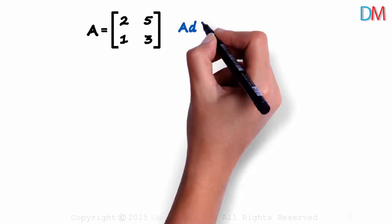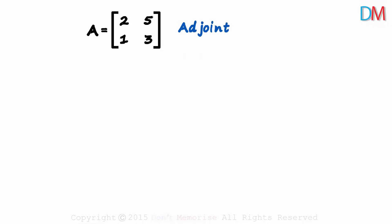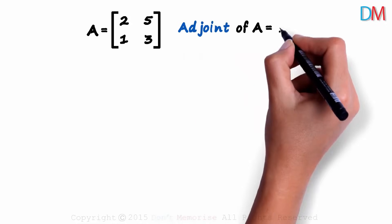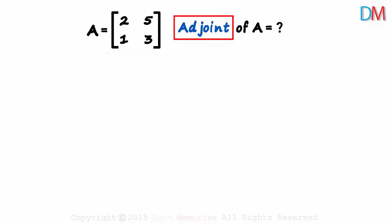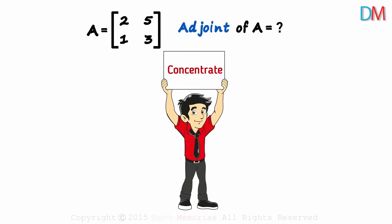Given a matrix, how do we find its adjoint? This is a 2 by 2 matrix A and we need to find its adjoint. This is a new term and may be slightly confusing, but it will be easy if you concentrate well for the next two minutes.